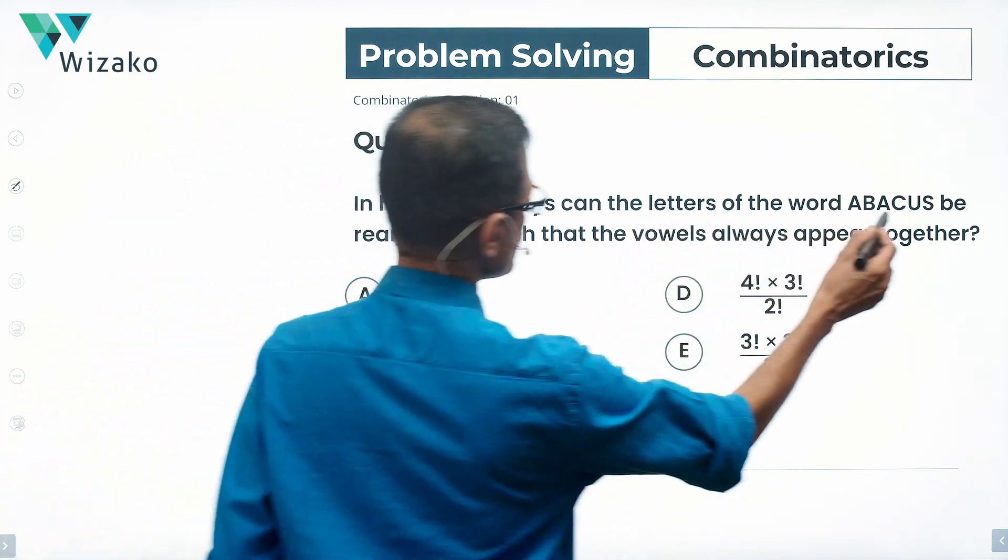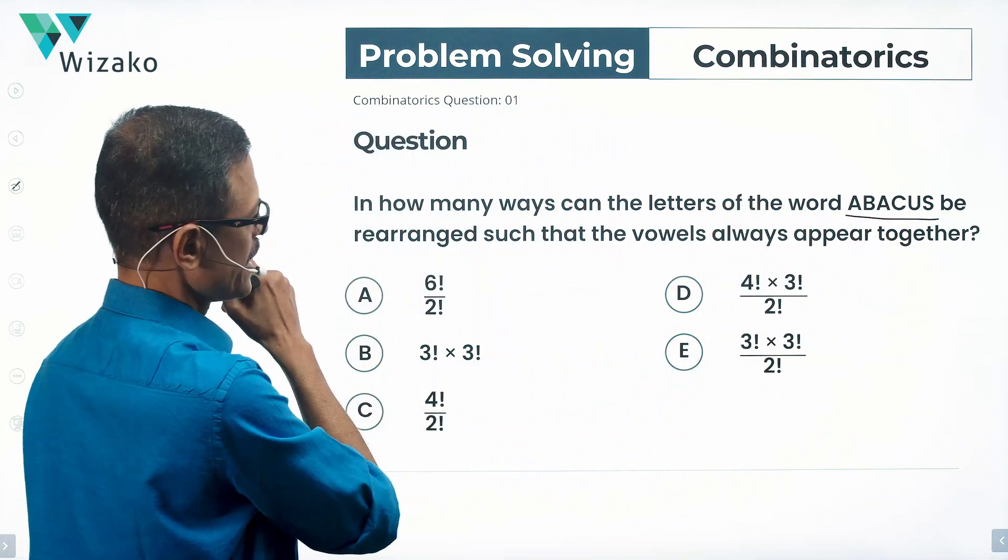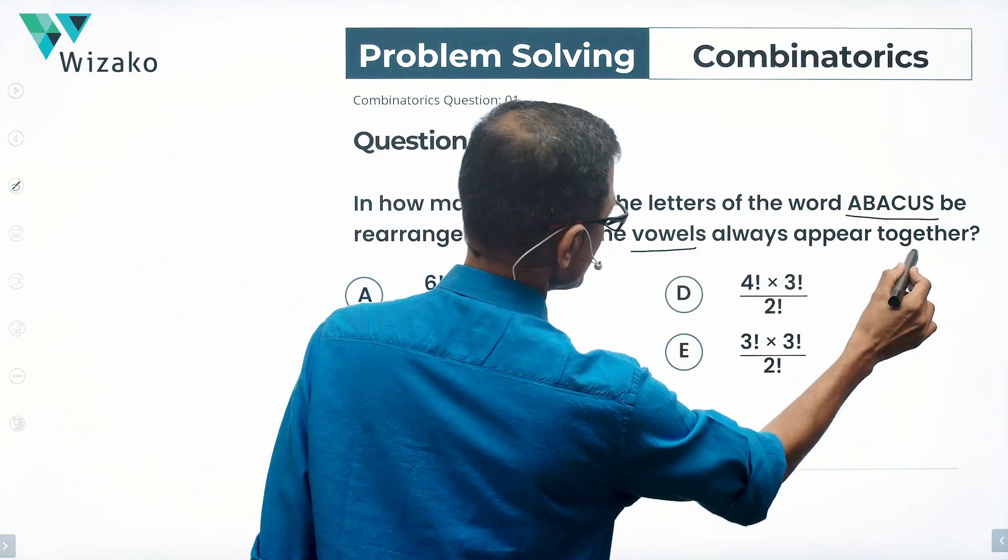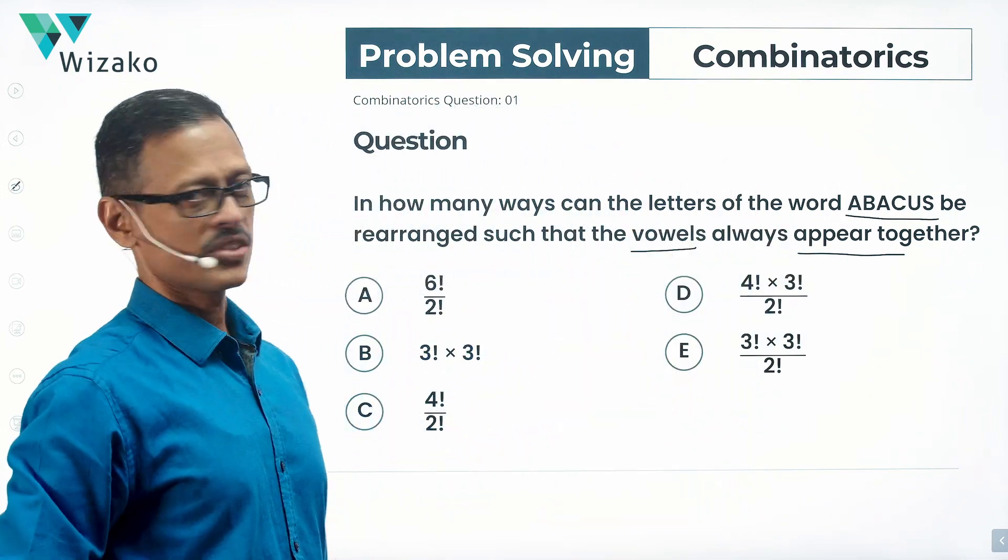In how many ways can the letters of the word ABACUS be rearranged such that the vowels always appear together? That is the question.